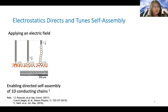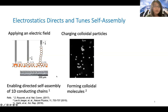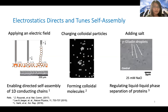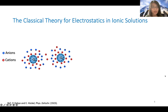Why are we interested in electrostatics? Electrostatics provides a lot of tuning parameters for self-assembly. For example, applying an electric field will lead to the formation of one-dimensional conductive chains. Another example is charging colloidal particles will lead to formation of colloidal molecules. Electrostatics is also very important for biophysics — adding salt to gamma-gliadin droplets will lead to liquid-liquid phase separation of proteins. So adding salt or ions provides an important tuning parameter for self-assembly in soft-matter systems.